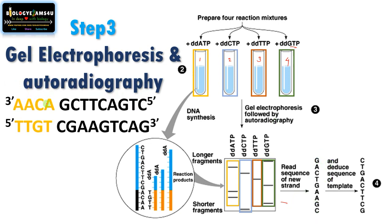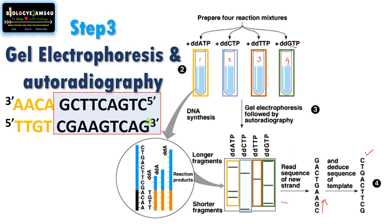The original template sequence read from bottom to top is C, G, A, A, G, T, C, A, G. If we have this template strand, it is very easy to deduce the sequence of the target DNA using complementary base pairing. This is how we deduce the DNA sequence using Sanger's method — a manual method. From the template strand we can derive the original sequence of the unknown target DNA.